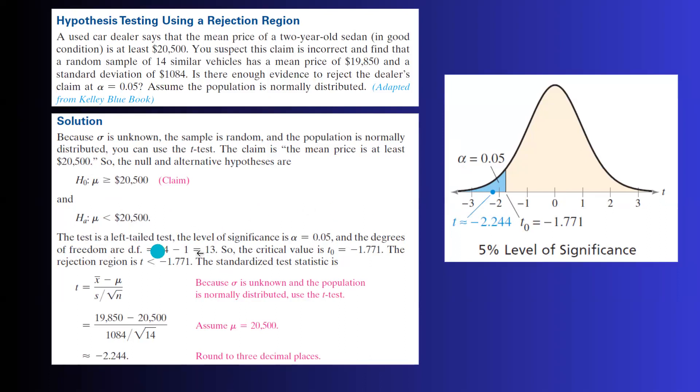Now the degrees of freedom is 13, and the critical value is going to be negative 1.771. The rejection region is any number less than the critical value.